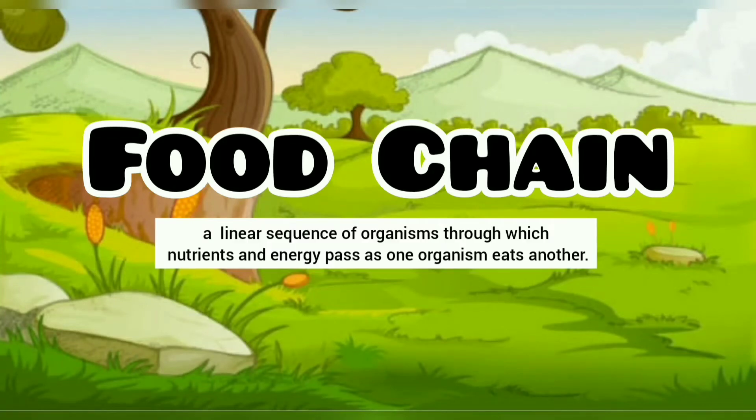A food chain is a linear sequence of organisms through which nutrients and energy pass as one organism eats another.